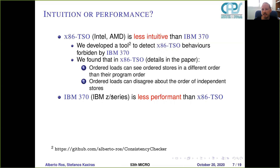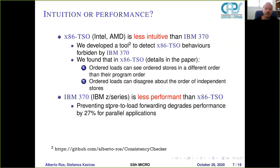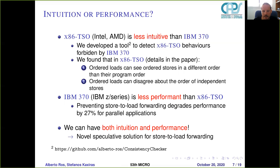IBM 370 is less performant than x86-TSO. Our evaluation shows that when we disallow store-to-load forwarding, parallel applications degrade performance by 27%. So, can we have both intuition and performance? Yes — in this paper we show that with a speculative solution for store-to-load forwarding, we can get both.